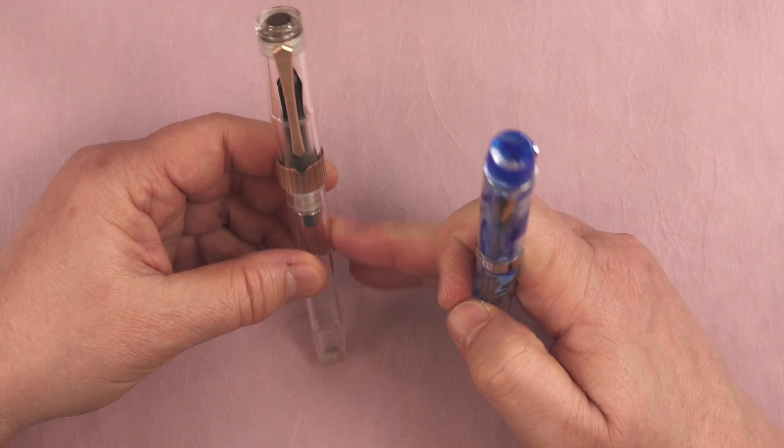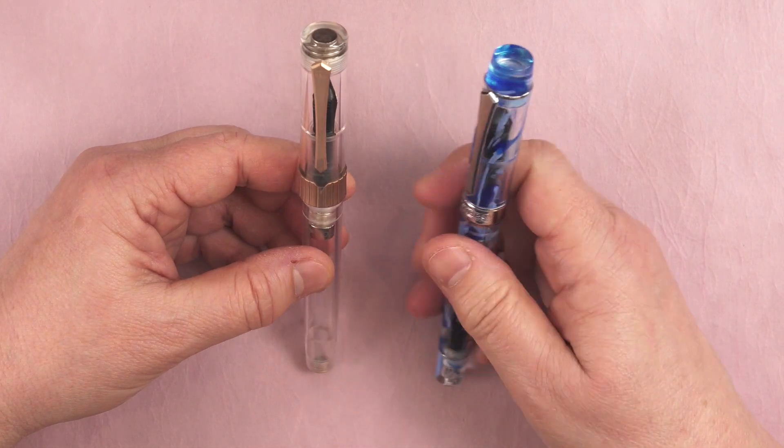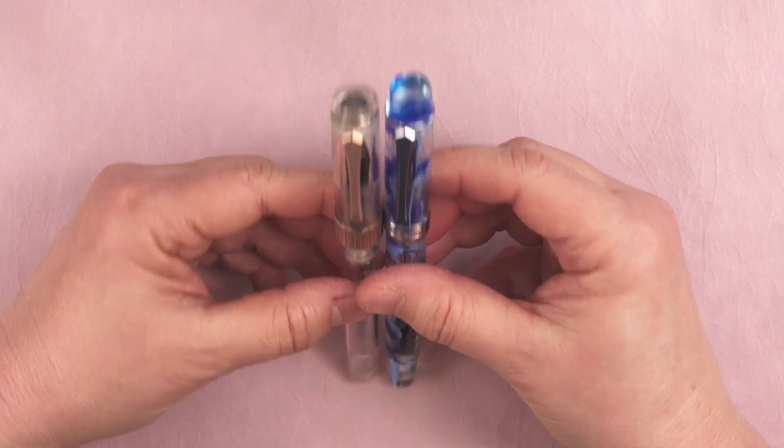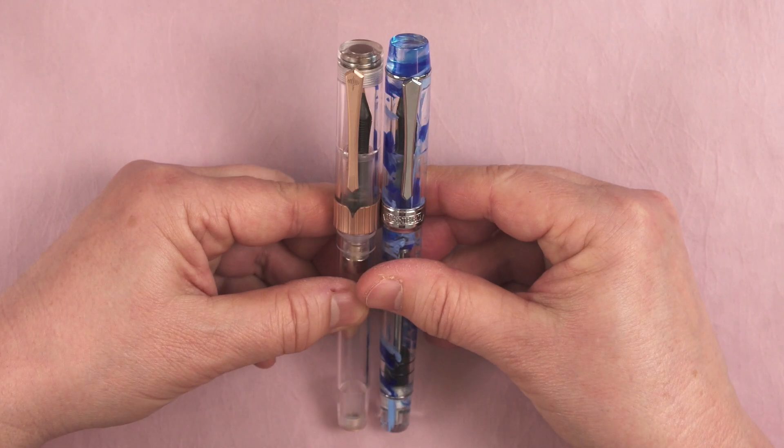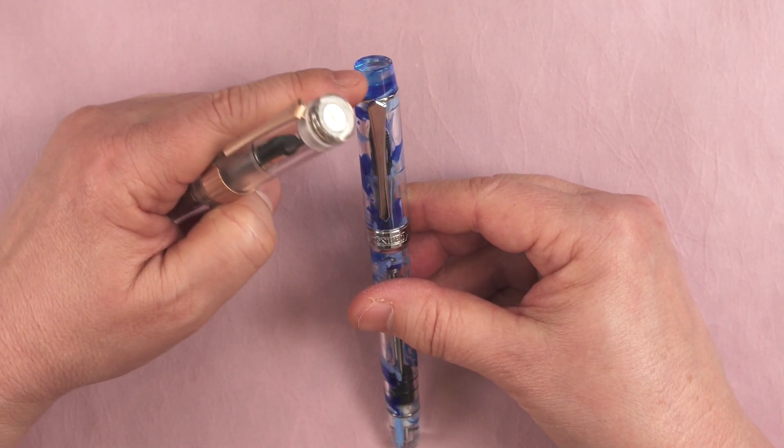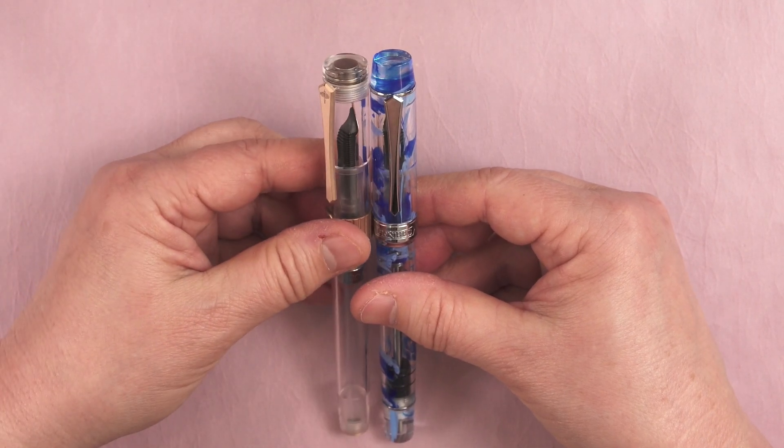Here it is compared to the PenBBS 492. They're exactly the same height except for just a little bit at the top. They both have the same clip and feel about the same, except the top is a little more conical looking on the 355.